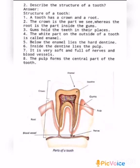Gums hold the teeth in their places. The white part on the outside of your tooth is called the enamel. Below the enamel lies the hard dentine. Inside the dentine lies the pulp. It is very soft and full of nerves and blood vessels. The pulp forms the central part of the tooth.